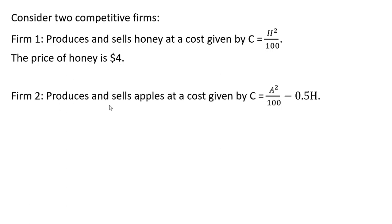Firm two is an apple orchard that produces and sells apples at a cost given by C = A²/100 - 0.5H, where A is the quantity of apples. You'll also notice in this cost function the minus 0.5H.